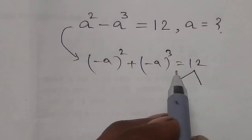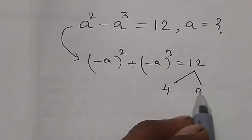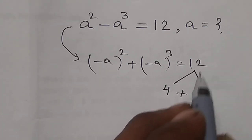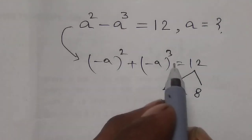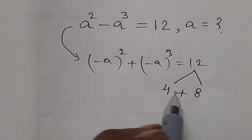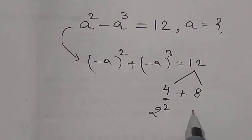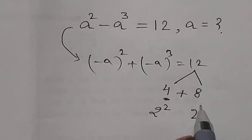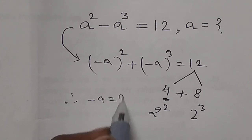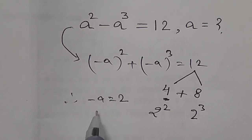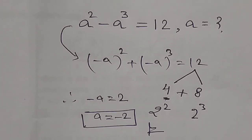We can write 4 and 8, since their sum is 12, and 4 is a perfect square and 8 is a perfect cube. So 4 is the square of 2 and 8 is the cube of 2. Therefore, -a = 2, so a = -2. This is the right answer.